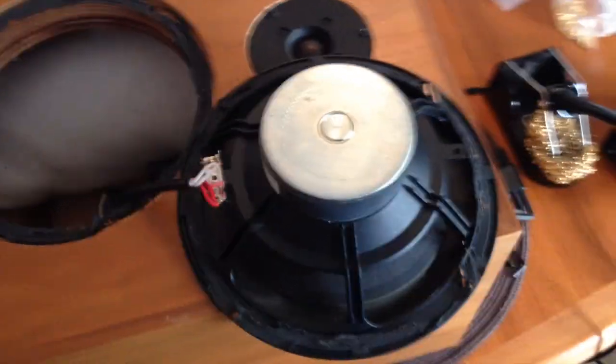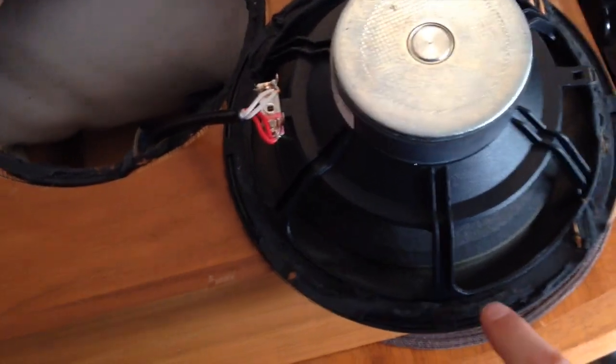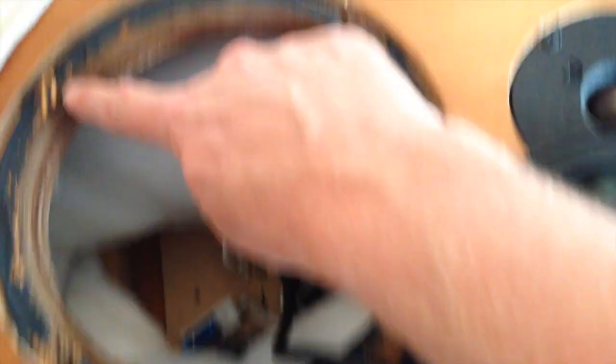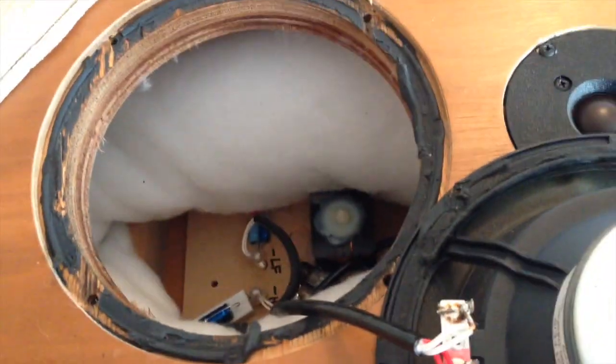So here we have the drive unit removed. You can see all the mastic around here and then inside here which all needs to be removed. Sometimes you are going to peel off some wood but luckily we didn't this time.